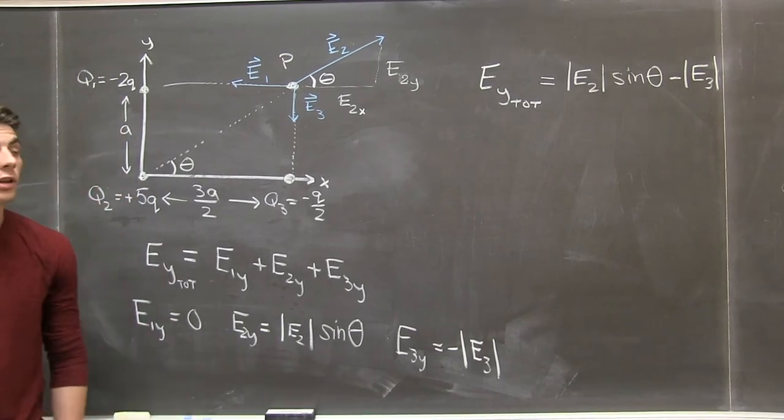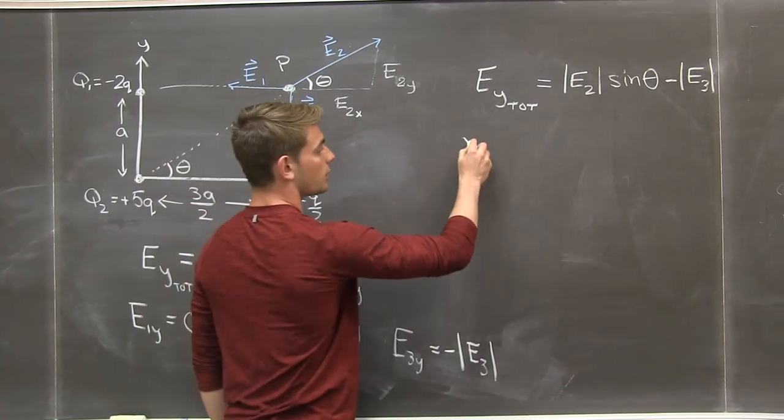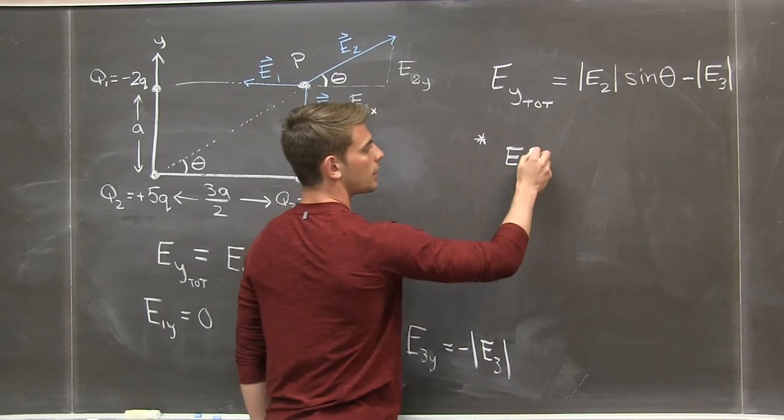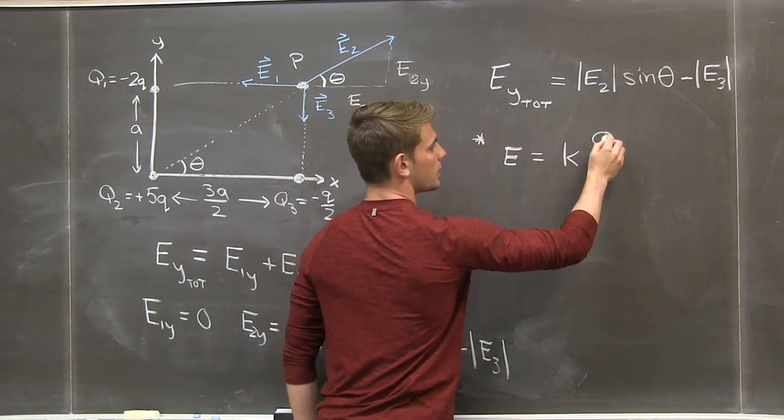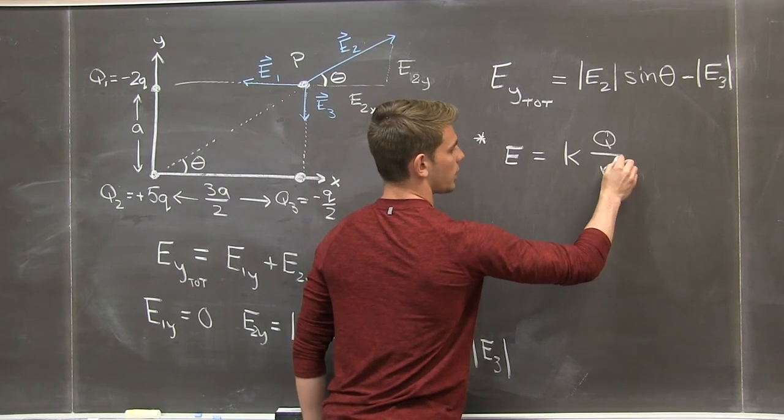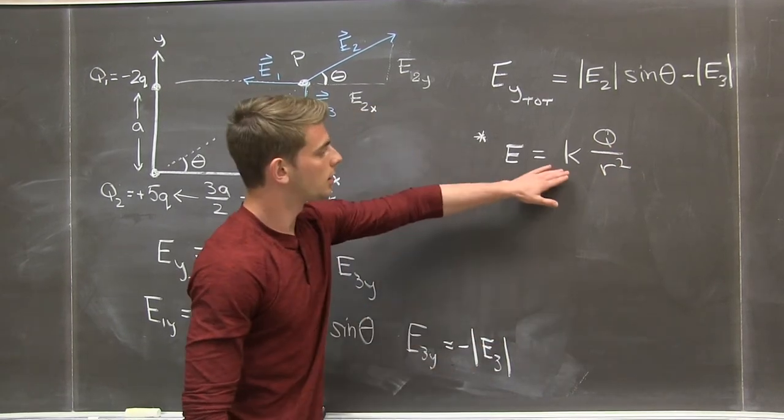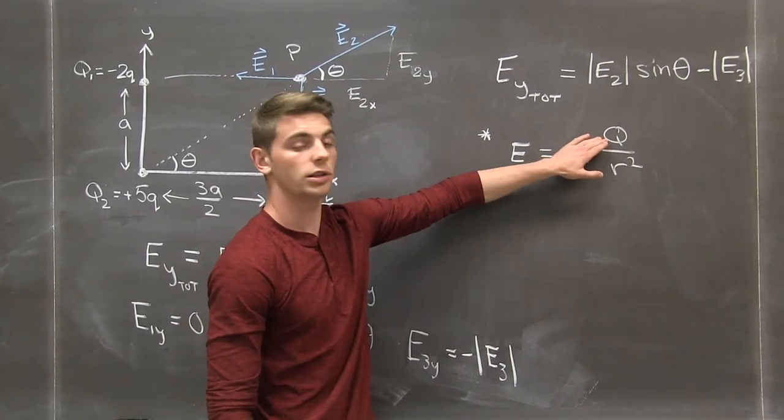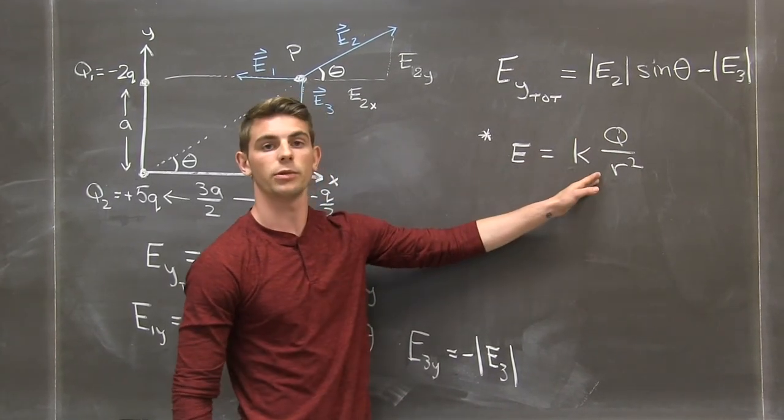Now, recall that the electric field due to a point charge is equal to k q over r squared, where k is Coulomb's constant and r is the distance between the charge q and the point in space we're considering.